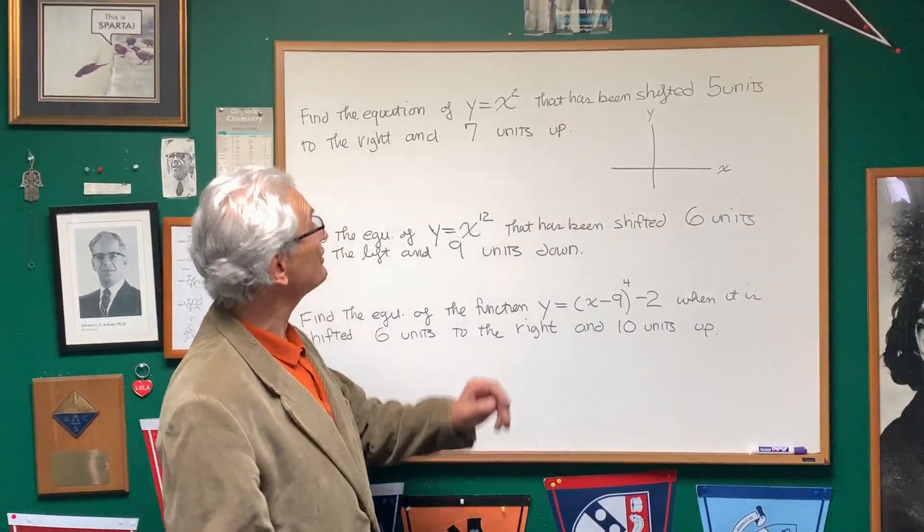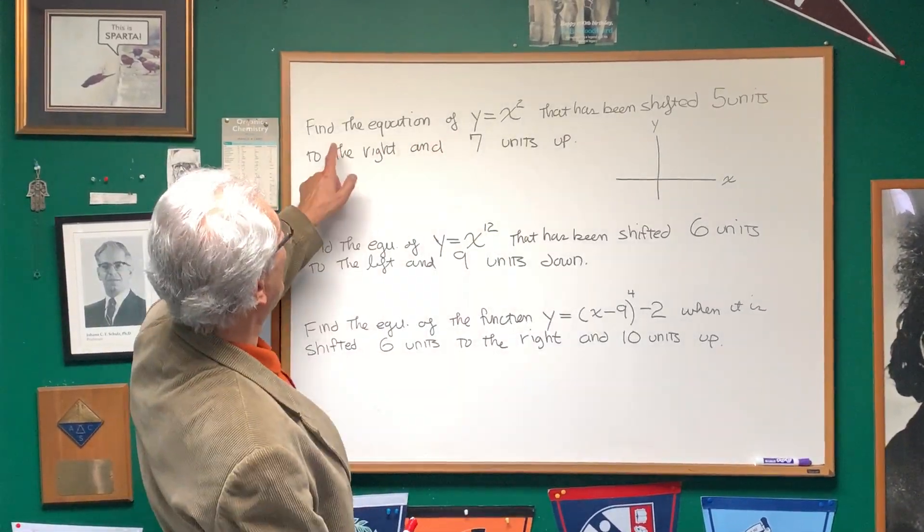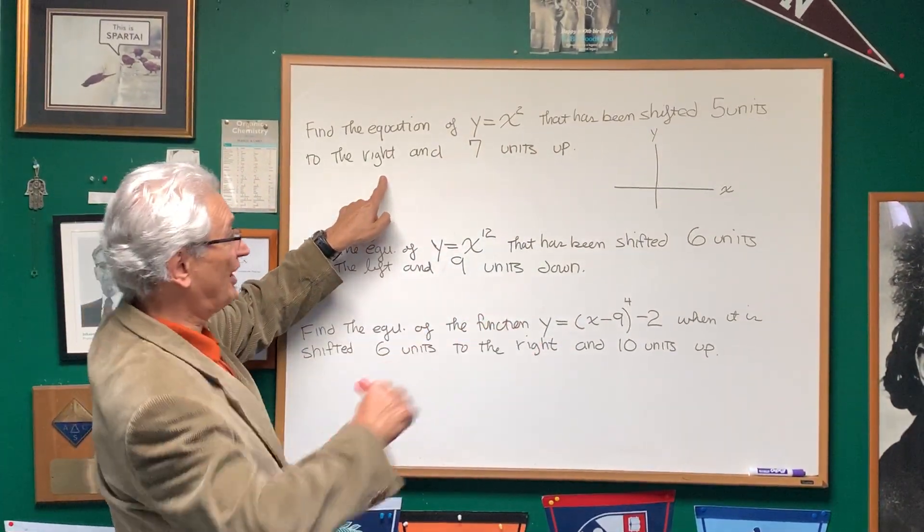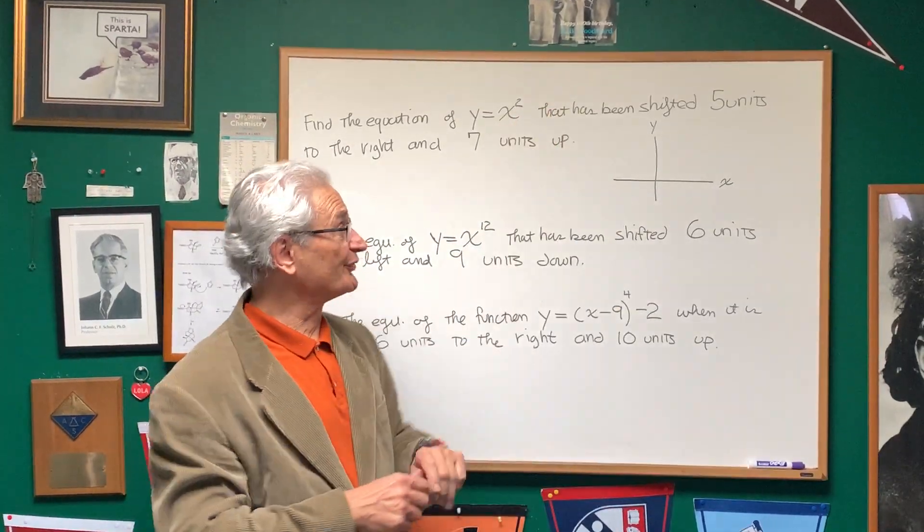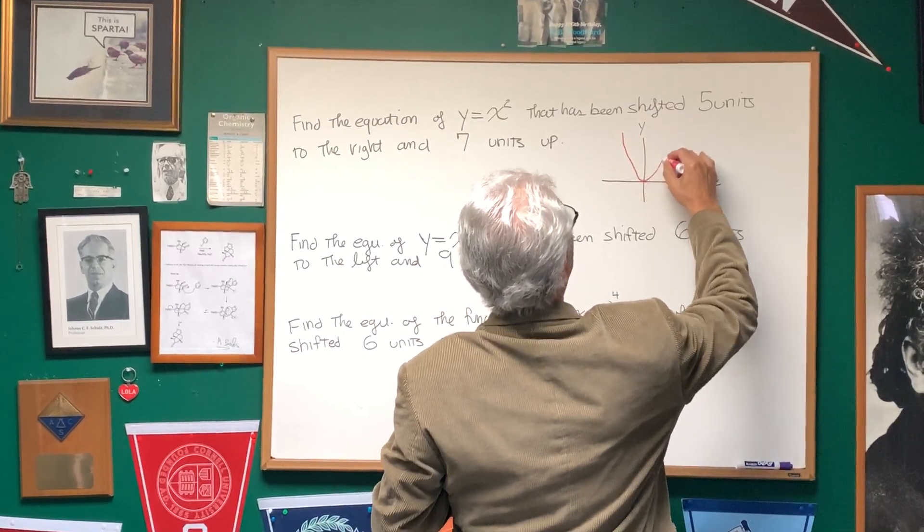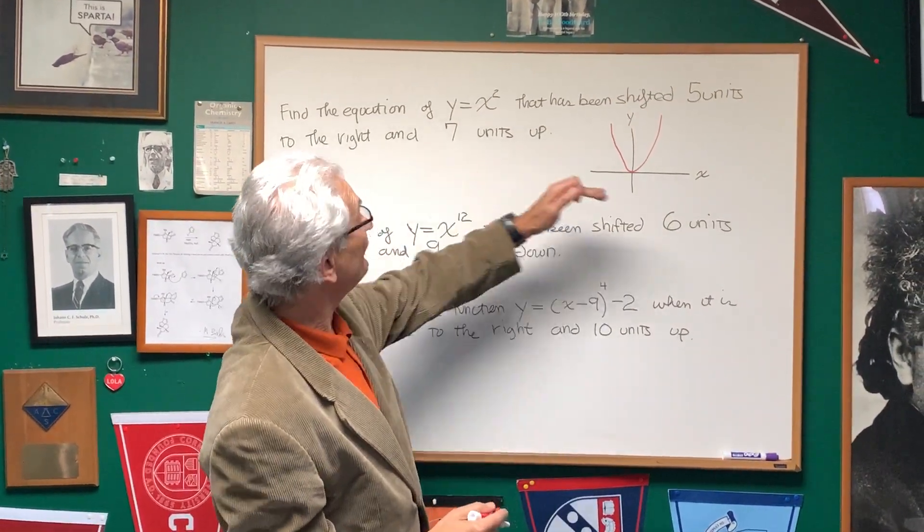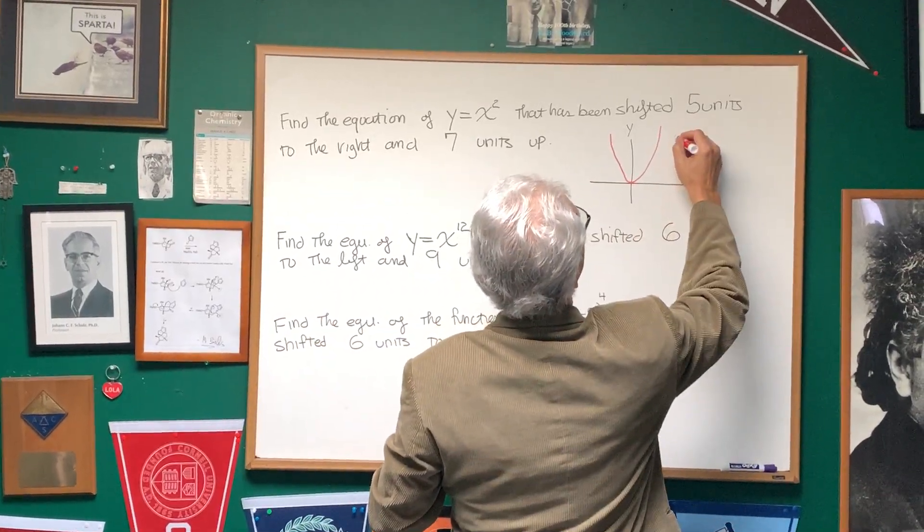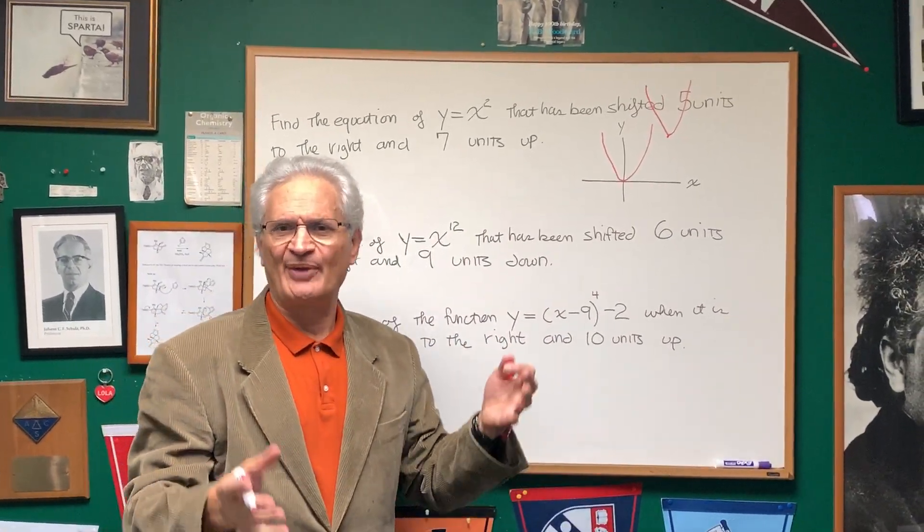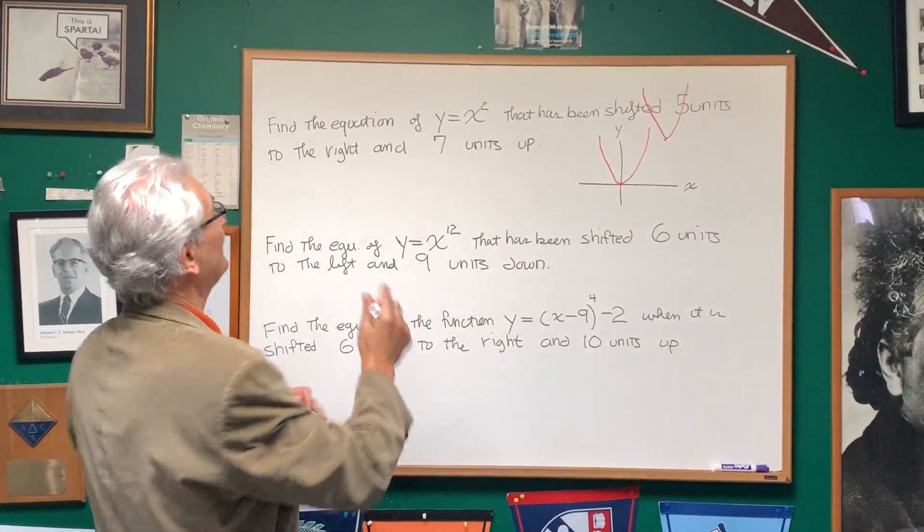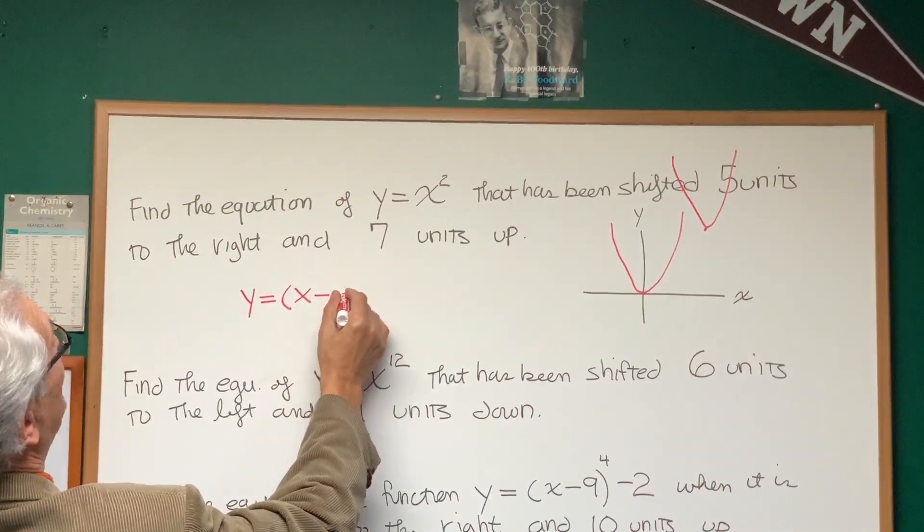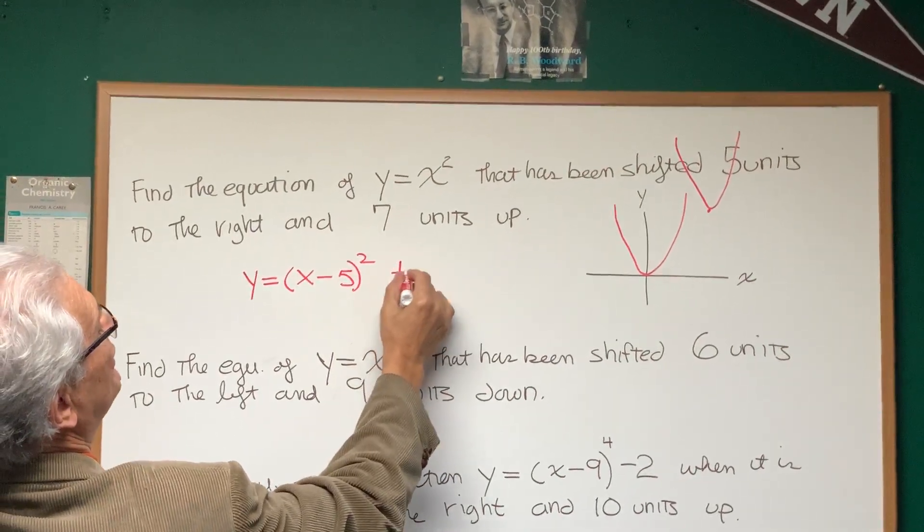Yes, these are translations of equations. Let's look at the first problem: Find the equation of y = x² that has been shifted five units to the right, horizontally, and seven units up, vertically. Well, I think everybody should know that y = x² is a parabola. If we're going to shift that five units to the right and seven units up, it's going to look approximately like this. So what does it look like in equation form? That's the whole key. It looks like this: y = (x - 5)² + 7.